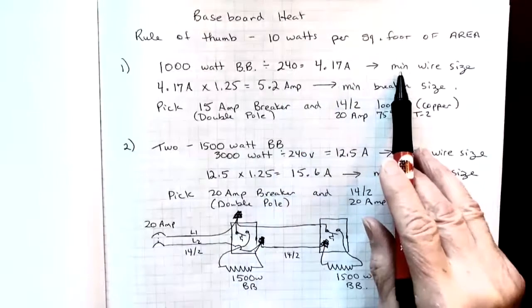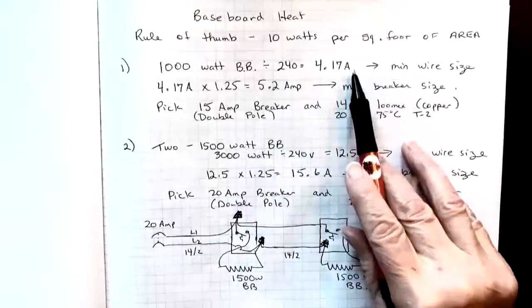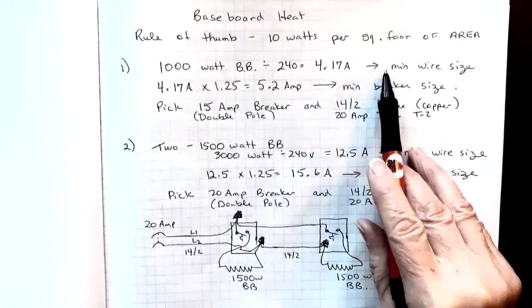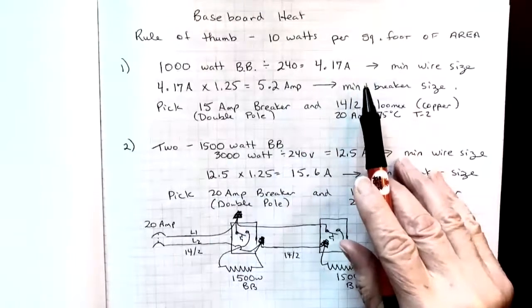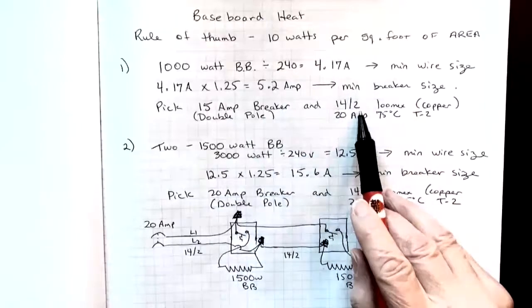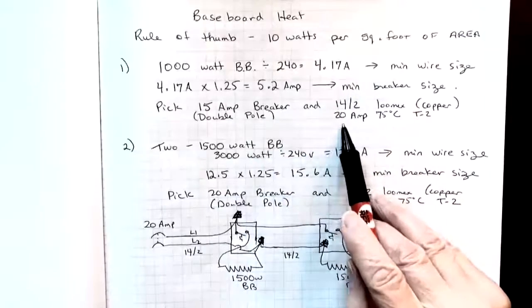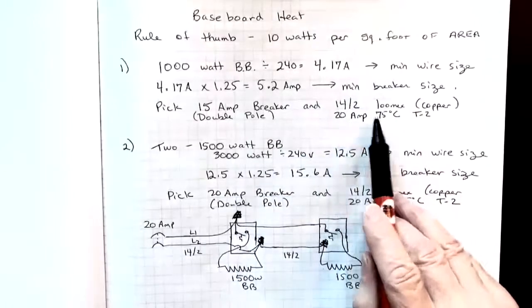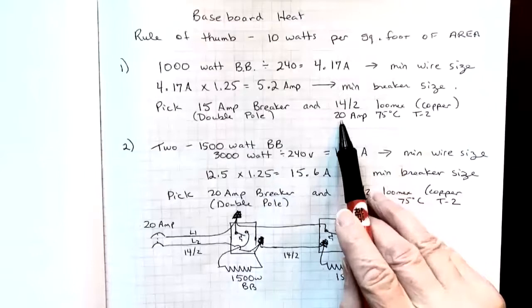So our minimum wire size is going to be based on the 4.17. Of course, we use 14.2 as a minimum wire size. And so we're going to end up with a wire that can easily handle that load. 14.2 Lumex out of table two in the 75 degree column gives us 20 amps.